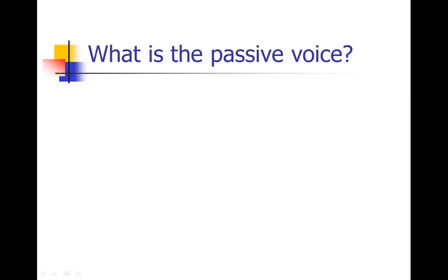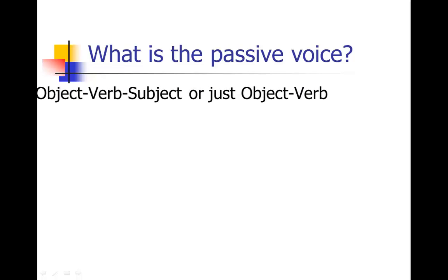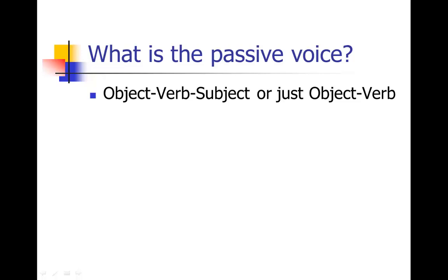Contrast that to the passive voice. The passive voice inverts that structure — it goes object, verb, subject, or sometimes just object, verb, where the subject is completely removed from the sentence. You can see it's a very awkward way to speak. Instead of she throws the ball, you would say the ball was thrown by her — and you can see that's a really awkward way to talk. We never speak in the passive voice, yet somehow when we sit down to do academic or scientific writing, a lot of us start to write in the passive voice. And it's also very awkward in writing.